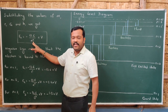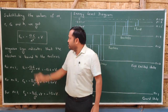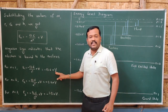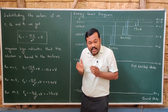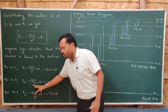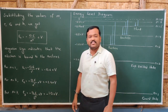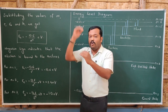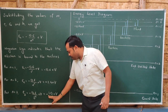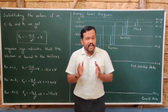Using E_n = -13.6/n² eV: for the first orbit, substitute n = 1 to get -13.6 eV. For the second orbit, substitute n = 2 to get -13.6/4 = -3.4 eV. For the third orbit, substitute n = 3 to get -1.51 eV. This is how we find the energies of different orbits of the hydrogen atom.